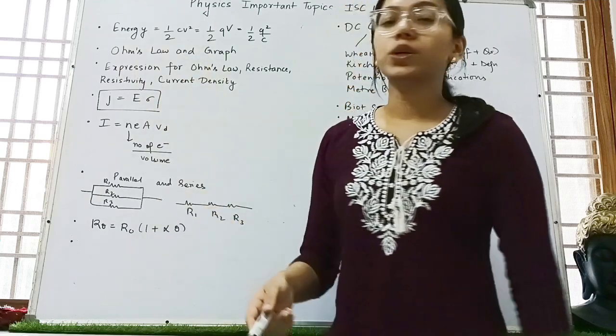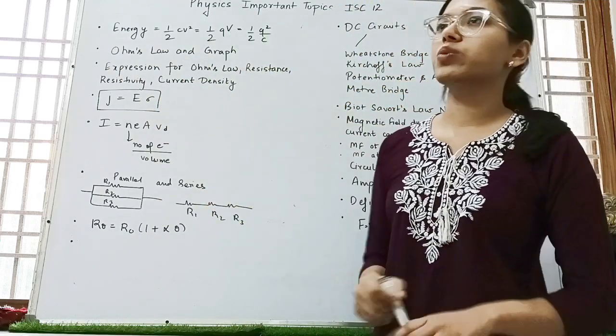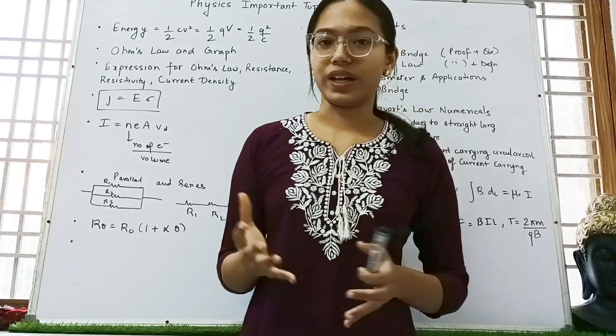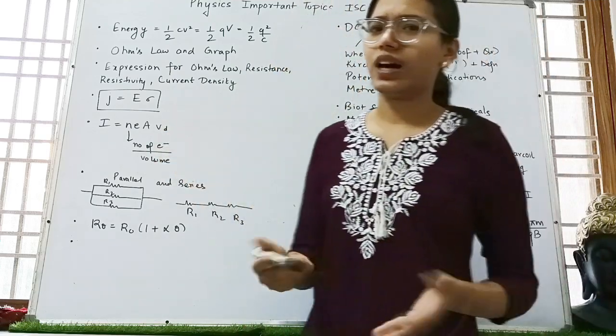Now energy is equal to half Cv square is equal to half Qv equals to half Q square by C. You know how to derive it, right? And there are questions may be asked.